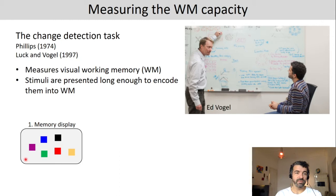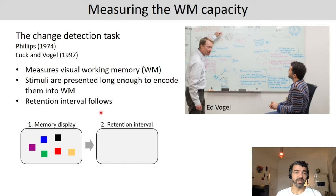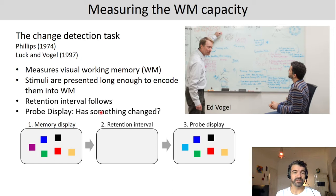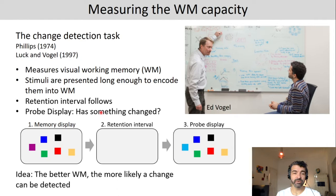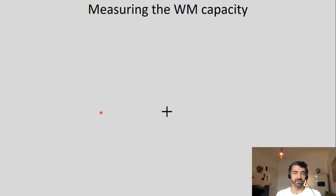A number of items are presented to participants — this is the so-called memory display. After these stimuli are presented and encoded into working memory, a retention interval follows during which there's nothing on the screen. Then there's a probe display, which probes working memory — namely how well the items are stored. The idea is: the better the working memory, the more likely a change can be detected.